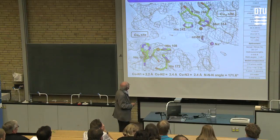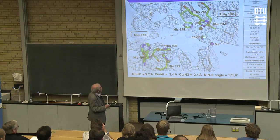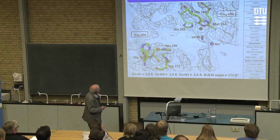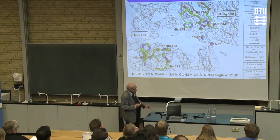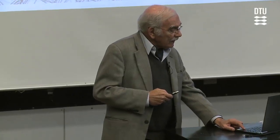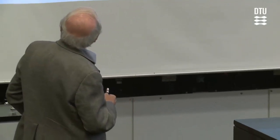We also did the structure with azide. Here is the azide coordinating the catalytic copper, and it brings in a sodium to compensate for the charge. But again, at the other copper site there is no coordination. Then we asked: maybe it will coordinate if the enzyme is reduced. So we did the same structures with the reduced enzyme by including 5 millimolar ascorbic acid. We never see ascorbic acid bound to the molecule.